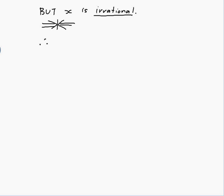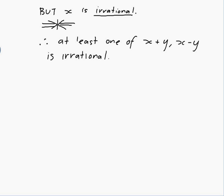Therefore, the thing I wanted to show must be true. Therefore, at least one of x plus y and x minus y is irrational. And that should be the end of my proof.